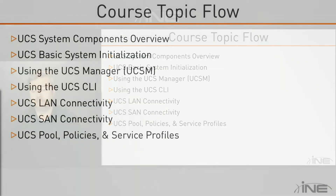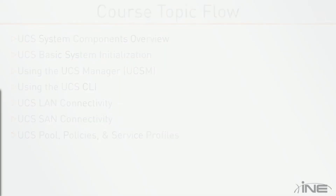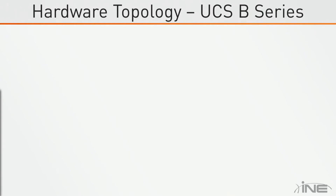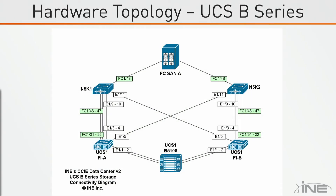For this section of the course we're going to have two different topologies. The first is going to be the B series blade chassis — a UCS 5108 blade series chassis connected to multiple UCS fabric interconnects. The fabric interconnects then connect to Nexus 5000 switches, specifically 5672 Gen3 switches, with both native Fibre Channel ports and Ethernet ports.